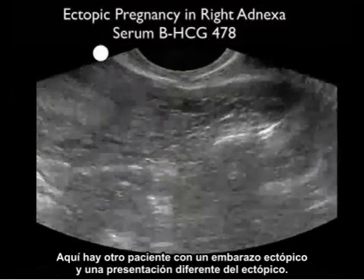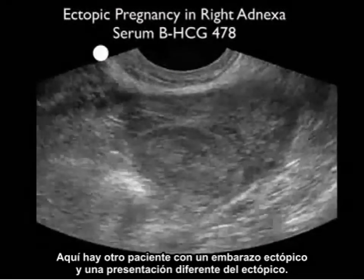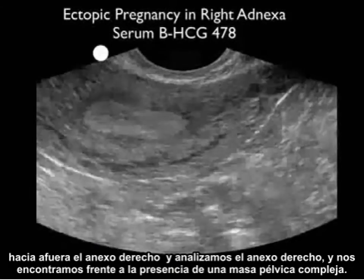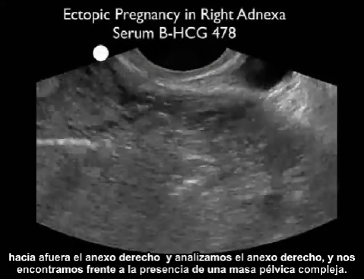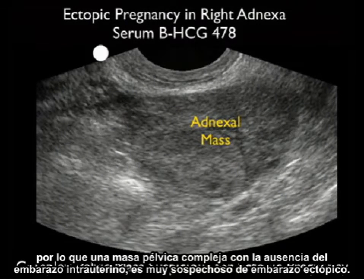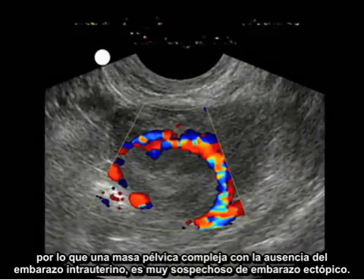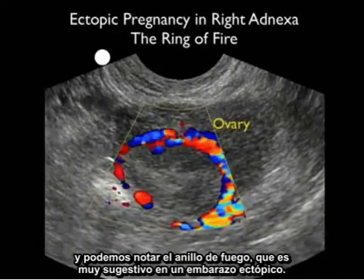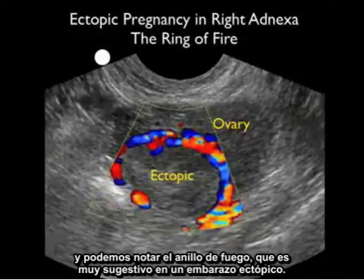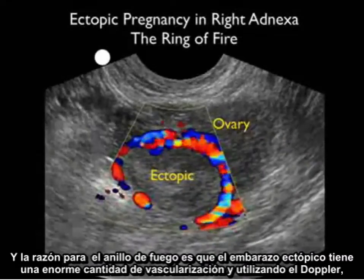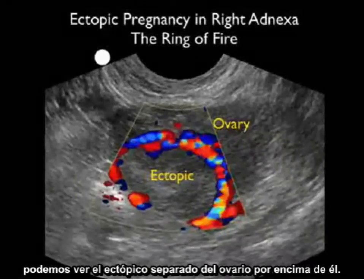Here's another patient with a different presentation of ectopic pregnancy. We're scanning from the more midline uterus out to the right adnexa, where we notice the presence of a complex pelvic mass. Notice also the relatively low serum beta-HCG in this case at 478. A complex pelvic mass with an absence of an intrauterine pregnancy is very suspicious for ectopic pregnancy. As we put Doppler flow on the complex pelvic mass, we notice the presence of the ring of fire, very suggestive of ectopic pregnancy. The ectopic pregnancy pulls a huge amount of vascularity towards it, and using Doppler we can separate the ectopic from the ovary above it.